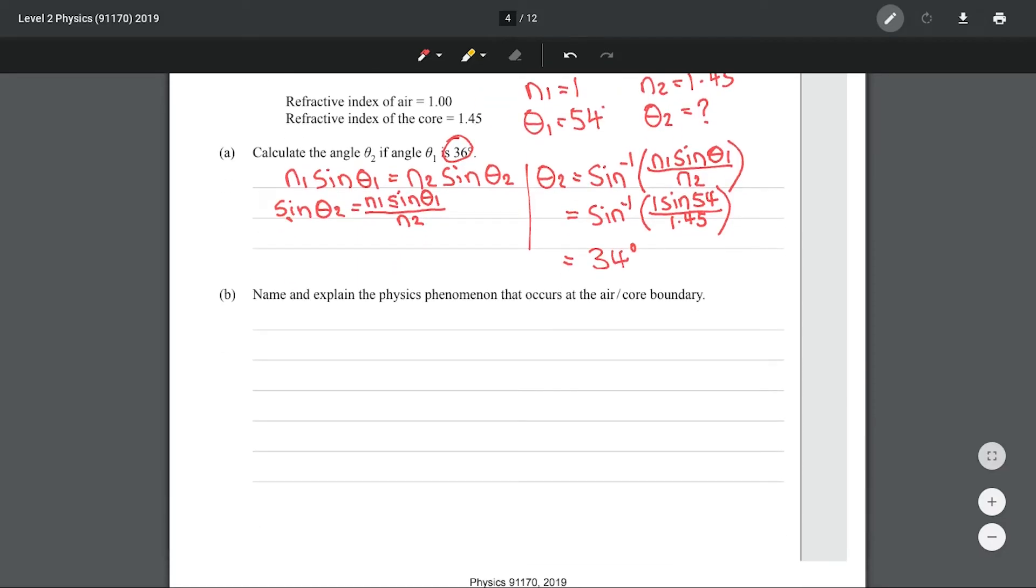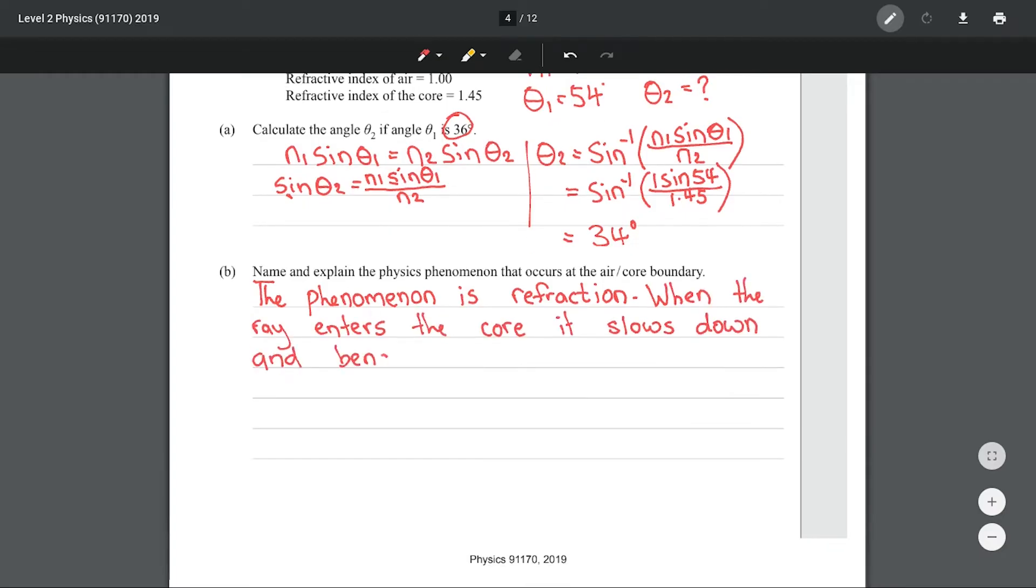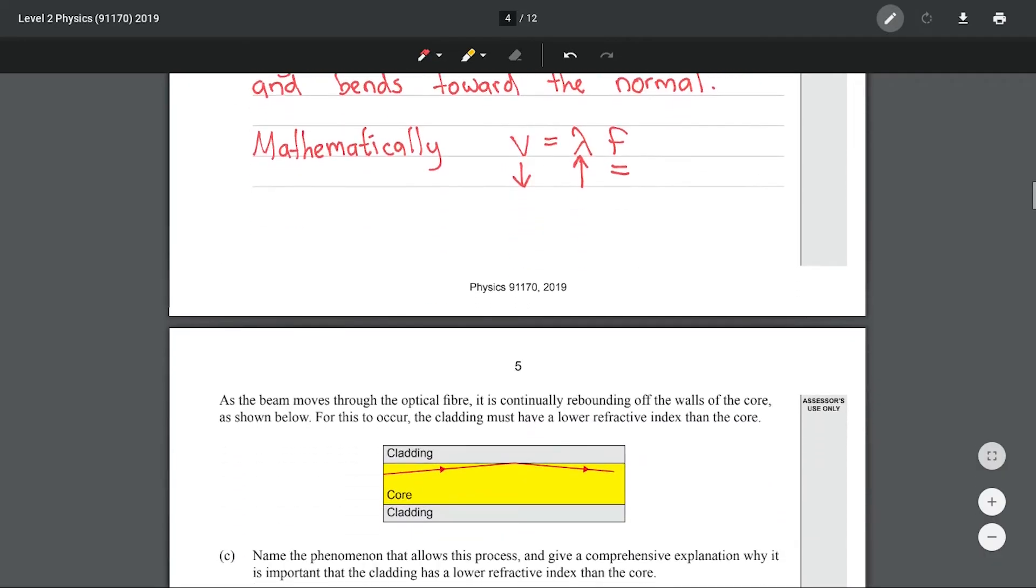Name and explain the physics phenomenon that occurs at the air core boundary, which is basically asking for the textbook definition of refraction. The phenomenon is refraction. When the ray enters the core it slows down and bends toward the normal. Mathematically the velocity goes down, the wavelength goes down, and the frequency remains the same.